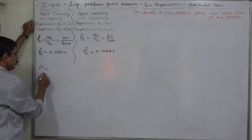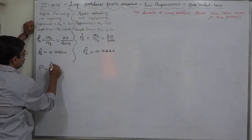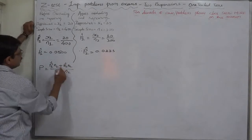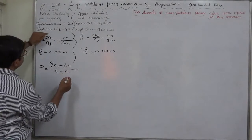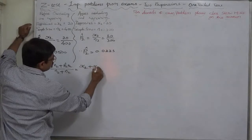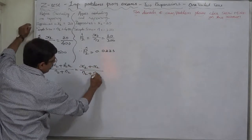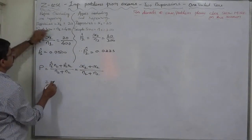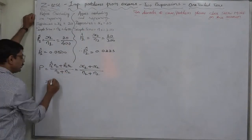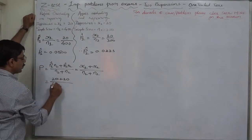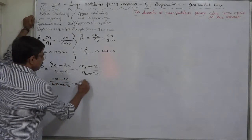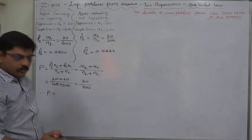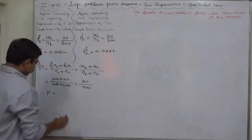The best estimate of the population proportion is P = (P̂₁·N₁ + P̂₂·N₂) / (N₁ + N₂), which simplifies to P = (X₁ + X₂) / (N₁ + N₂). Substituting: (20 + 10) / (400 + 300) = 30/700, so P = 0.0429.